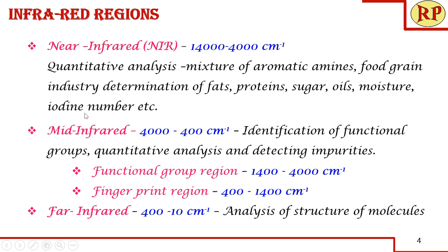The mid-infrared region is what we commonly call IR spectroscopy. It is further subdivided into the functional group region, which corresponds to 1,400 to 4,000 cm⁻¹, because in this region the functional groups can be detected — each functional group will have a characteristic peak in this region.